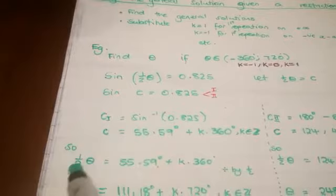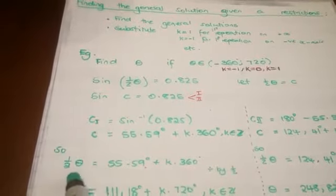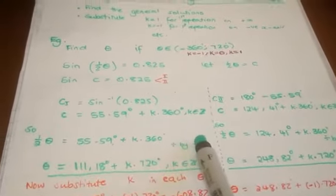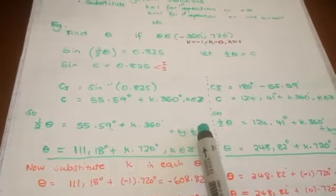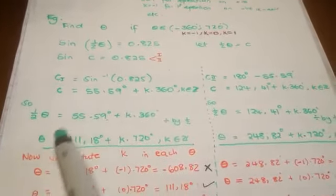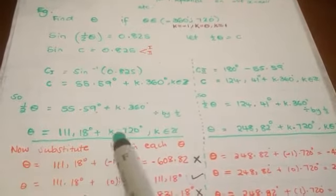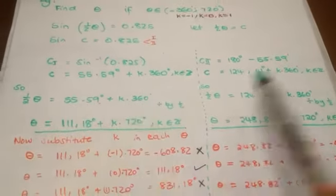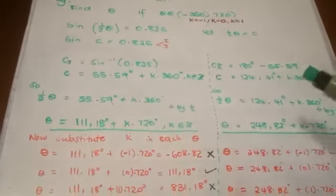Now remember that we didn't have C, so we have to bring back what was originally in the question. In the place of C, I put half theta back where it was. So half theta equals 55.59 on the right-hand side, and then you divide by half on both sides. Remember, divide by half, not two, because this is a half. So when you divide by half, it's the same as multiplying by two, so it becomes 111.18 plus K times 720.